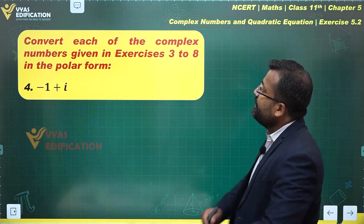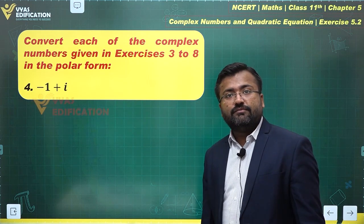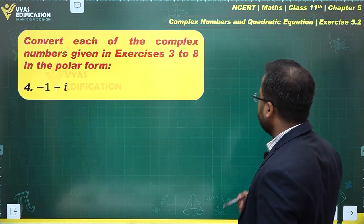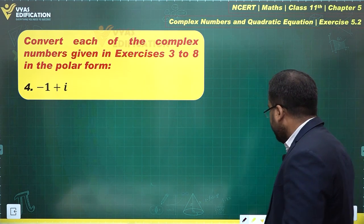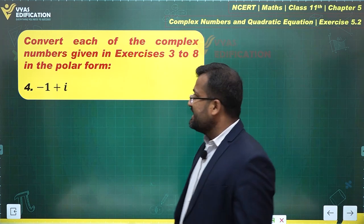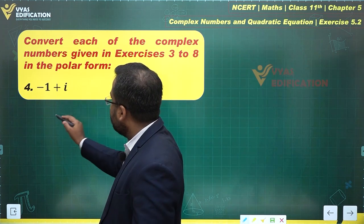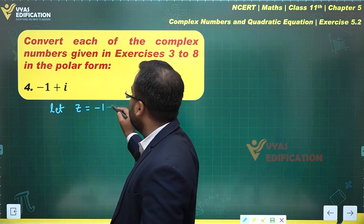Let us take a look at the next one: convert each of the complex numbers in the polar form. Let's try to convert this in the polar form. Polar form requires us to find the values of r and theta. r can be found easily with the help of, let us say, let z equals minus 1 plus i.